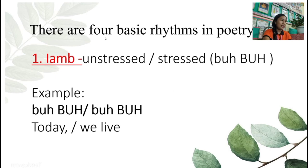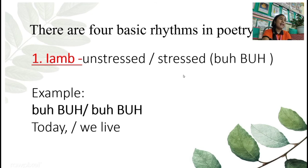So in a meter or in a rhythm, there are four basic rhythms in poetry. First is iamb. Iamb is unstressed followed by stressed, or bah-BAH. Example: to-DAY we LIVE. Unstressed, stressed.